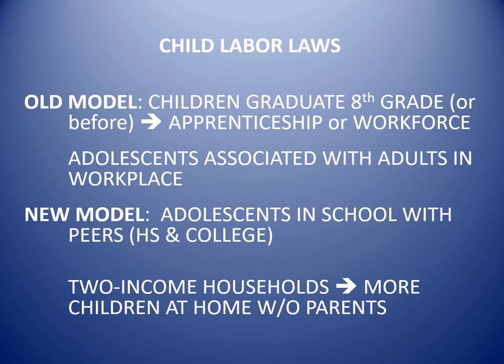Another change is the two-income household where not only the father but more commonly the mother is working, and therefore there are more children at home without parents. In the past, you would have seen a lot of adolescent and adult interaction. Now you see a lot less — not just because children are not allowed to work and are sequestered with individuals their own age, but also because their parents are not at home as much, something we covered in our video lectures on the family.